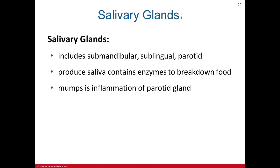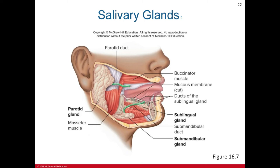There are three major pairs of salivary glands: the parotid glands, located just anterior to each ear — inflammation caused by viral infection produces mumps; the submandibular glands, which produce more serous than mucous secretion and can be felt along the inferior border of the mandible; and the sublingual glands, the smallest of the three, which produce primarily mucous secretion. Please also read Table 16.1 on the function of digestive secretions.